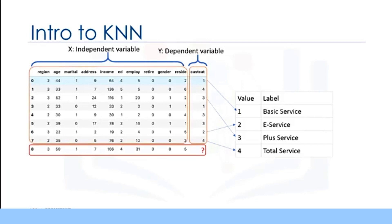The example focuses on using demographic data, such as region, age, and marital status, to predict usage patterns. The target field, called CustCat, has four possible values that correspond to the four customer groups, as follows: Basic service, e-service, plus service, and total service.